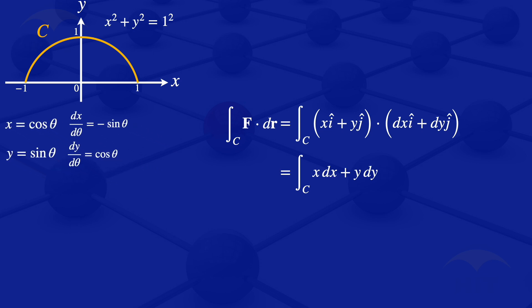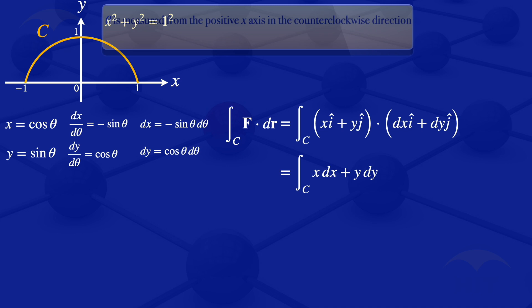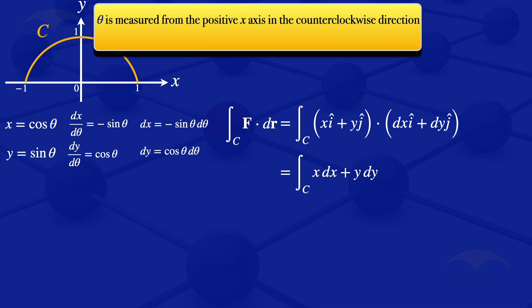From those derivatives, we get dx equals minus sine theta dθ, and dy equals cosine theta dθ. Recall that when measuring theta, we measure it from the positive x-axis in the counterclockwise direction.